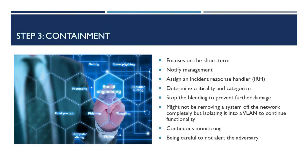Step three is containment. At this point, the focus is on the short term, and you should begin alerting management. This is also where the incident response handler is assigned and starts the process. You must stop the bleeding, prevent any further damage, determine the criticality of the situation, and categorize while containing whatever is affected. Before taking a system completely off the network, it should be determined what might be going on. If a system is vital to a business operation, impulsively taking something offline before understanding the event could have a more detrimental impact on the business. Containment might not mean completely taking a system off the network, but could mean isolating it in its own VLAN to monitor it or cut it off from other systems to prevent further infection.